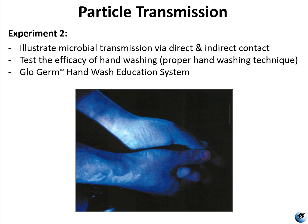For experiment two, we're going to illustrate microbial transmission via direct and indirect contact using glow germ powder. Glow germ is a synthetic material — basically plastic with dye in it that glows under UV. It's used to simulate microbial transmission because the individual pieces of powder are the size of individual cells of Saccharomyces cerevisiae, which is a yeast, but there are no toxins in glow germ. We'll use it to see how easily things are transmitted — you put some on your hands, touch your desk, shake somebody's hand, and see how much actually gets transferred. You can also use it to test how well you're washing your hands.